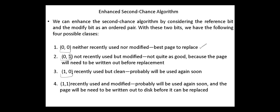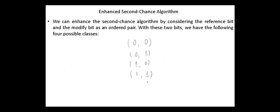One, zero: recently used but clean — we do not need to swap the page out, but it has recently been used. One, one: recently used and modified — the dirty bit is one and we have to swap it to the backing store. This algorithm searches the page table in a circular manner looking for the first page in the lowest numbered category. It first makes a pass looking for a zero-zero, and then if it cannot find one, it makes another pass looking for a zero-one, et cetera. The main difference from the second-chance algorithm is the preference for replacing clean pages if possible.